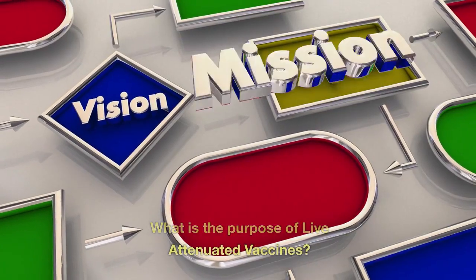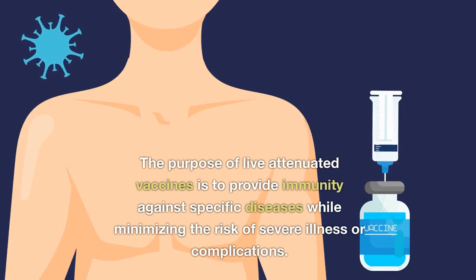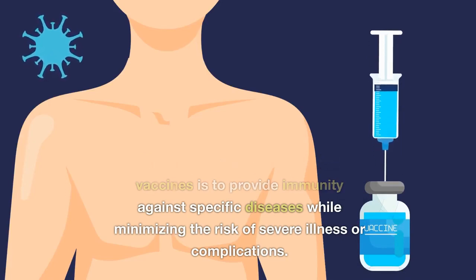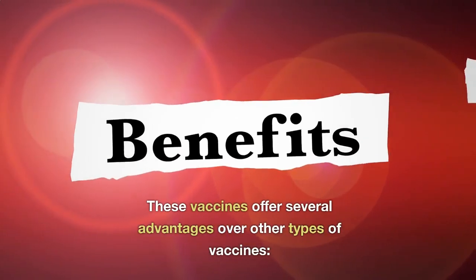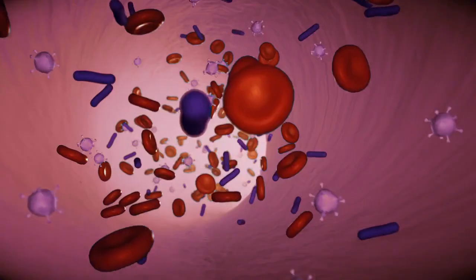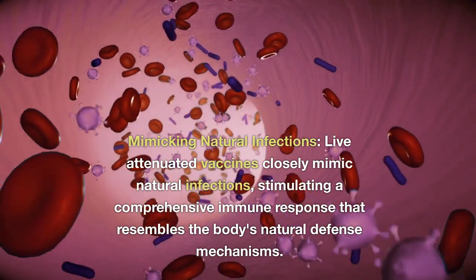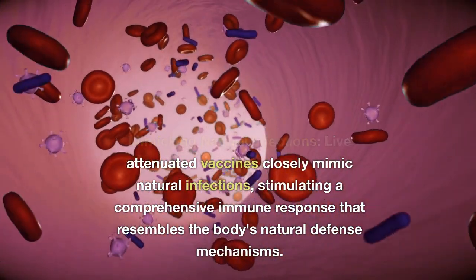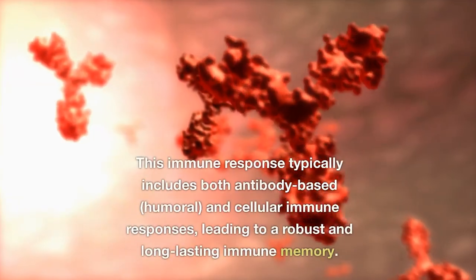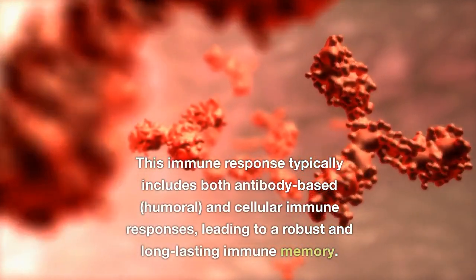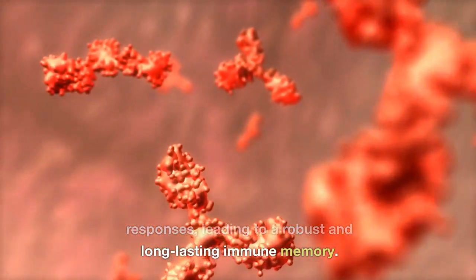What is the purpose of live attenuated vaccines? The purpose of live attenuated vaccines is to provide immunity against specific diseases while minimizing the risk of severe illness or complications. Live attenuated vaccines closely mimic natural infections, stimulating a comprehensive immune response that resembles the body's natural defense mechanisms. This immune response typically includes both antibody-based, humoral, and cellular immune responses, leading to a robust and long-lasting immune memory.